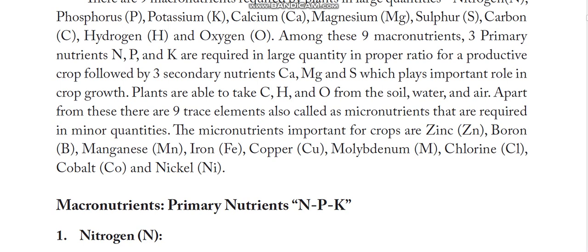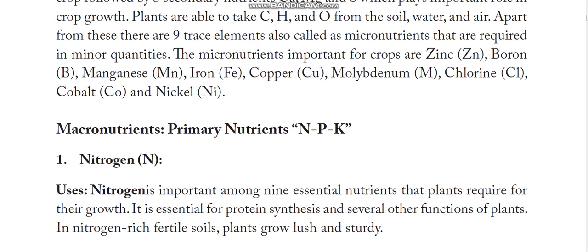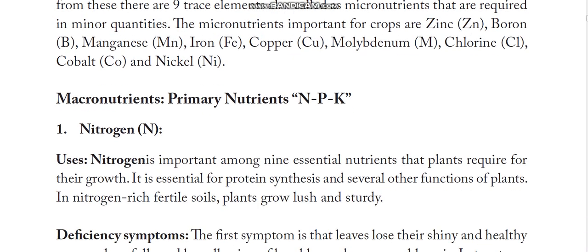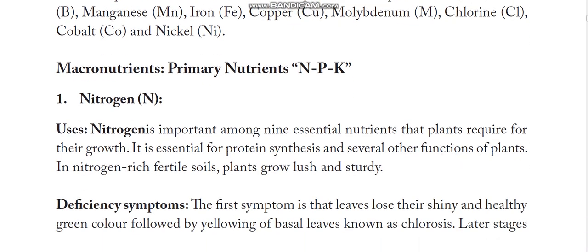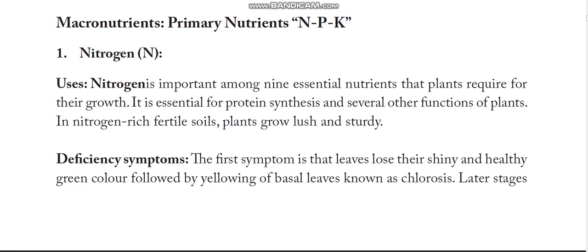Welcome to Srilat of Organic Farming. Today let us see what are all the macronutrients, their uses, deficiency symptoms, and how to correct them. Nitrogen is the first and foremost important primary nutrient, and it is required for the growth of the plants.